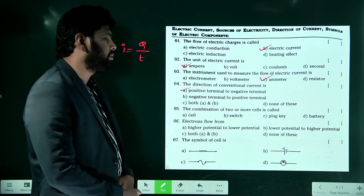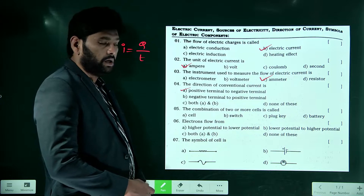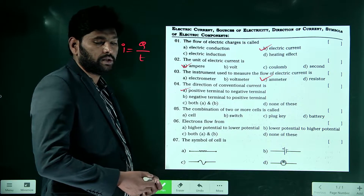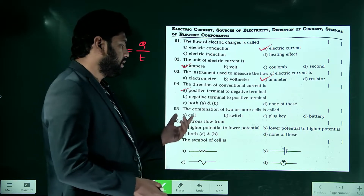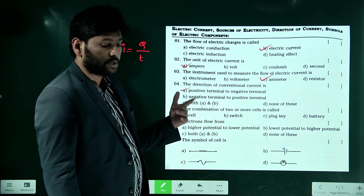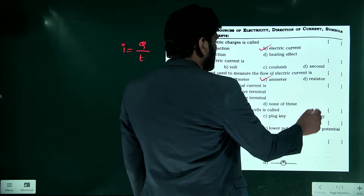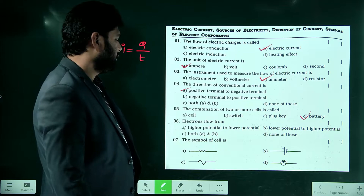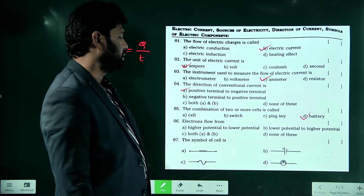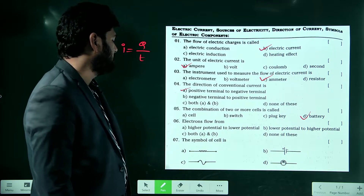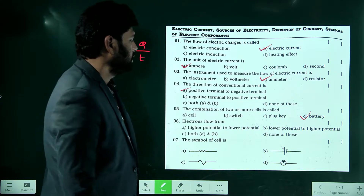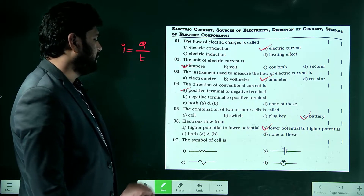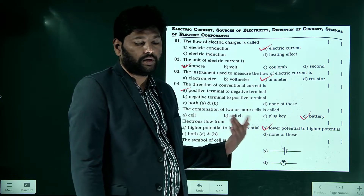The combination of two or more cells — one more thing to mention: in series connection, the combination of two or more cells connected in series is known as a battery. Electrons always flow from lower potential terminal to higher potential terminal, and the reverse of this flow is known as current.